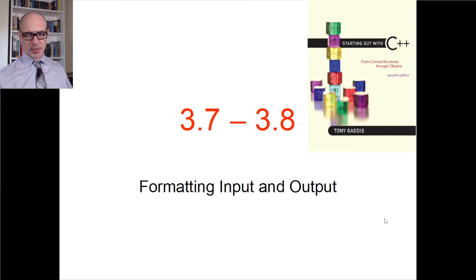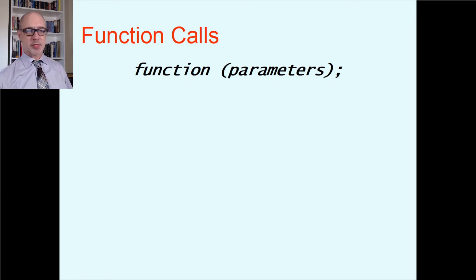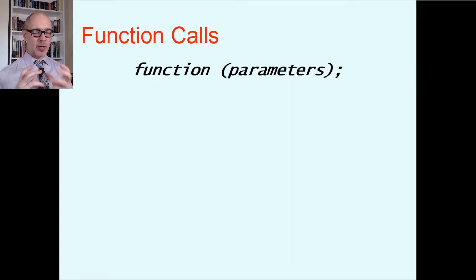Before we can do that, we have to understand something first, and that is calling other functions in C++. Everything we've been doing so far is inside the main function. There are lots of other functions built into C++, and we need to know how to interface with them at this point. A function call looks like this: somebody else has written a function to do some interesting job; it'll have a name, and when you want that to happen, you write down the name of the function, parentheses, and whatever parameters or information that function needs.